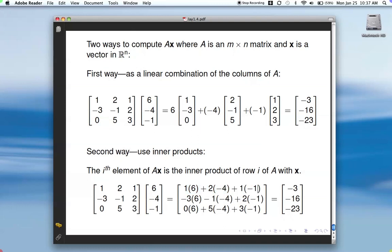Then to get the second component of A times X, it's the second row of A, inner product with X. So, negative 3 times 6, plus negative 1 times 4, plus 2 times negative 1, as we see here. Then, to get the third element, it's the third row of A, inner product with the vector X. So, those are two different ways you can compute the product of a matrix and a vector.